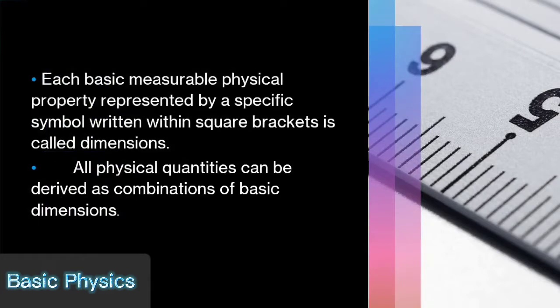Each basic measurable physical property represented by a specific symbol written within square brackets is called dimensions. All physical quantities can be derived as combinations of basic dimensions.